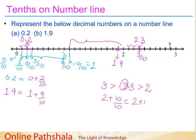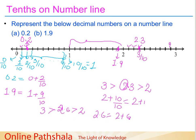Same way, let's take one more example of 2.6. The same rule applies: it is greater than 2, but as it does not have all 10 parts, it is less than 3. So it lies somewhere between 2 and 3, having 6 parts more than 2. That is, 2.6 is represented by 2 plus 6 by 10. So counting: 1, 2, 3, 4, 5, and 6 — this is 2.6.